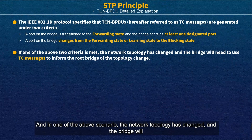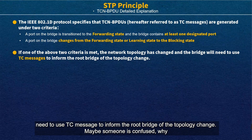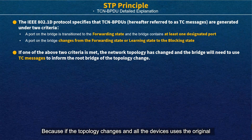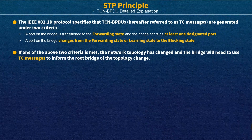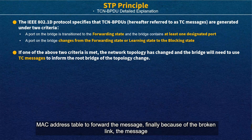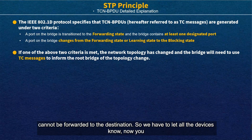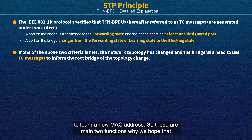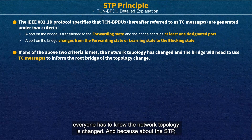In these two scenarios, the network devices will generate the TCN BPDU to inform the root bridge of the topology change. Someone may wonder why we need a special method: if the topology changes and all devices still use the original MAC address table, the message may not be forwarded to the destination due to the broken link. So we must let all devices know they need to use a new link and learn a new MAC address table.